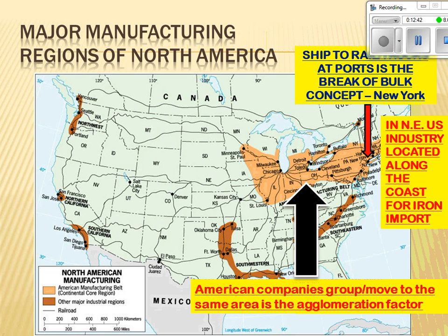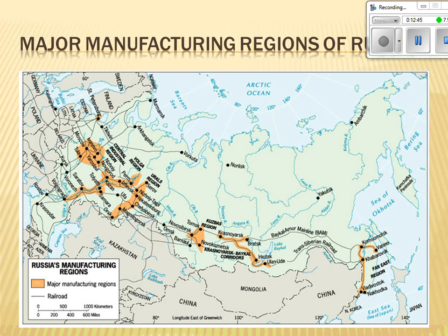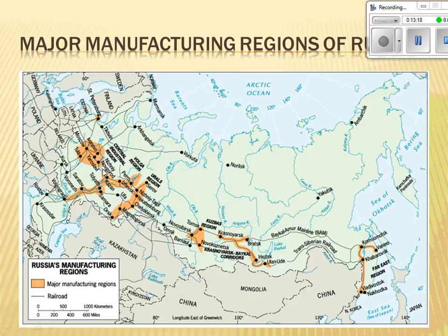American companies tend to cluster in one area — that's called agglomeration. Russia has the advantage of many major rivers: the Don, Volga, Ural, Irtysh, Ob, Yenisei, and Lena, with major industrial cities located along them. Nizhny Novgorod is considered the Detroit of Russia for major automobile manufacturing. Russia also has the Trans-Siberian Railway, which links all of these cities and is a huge advantage for industry.